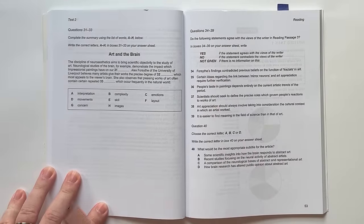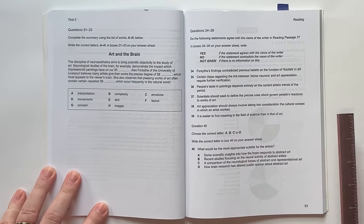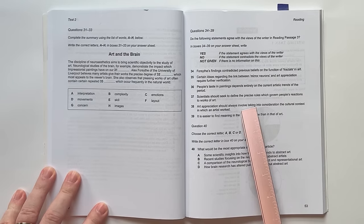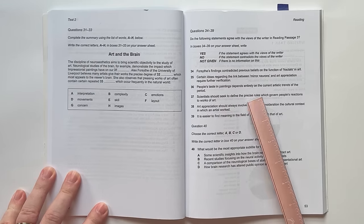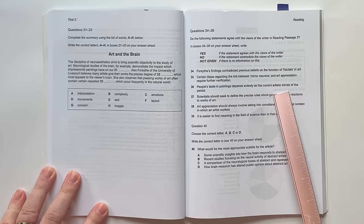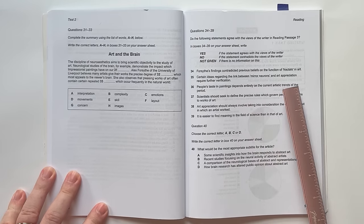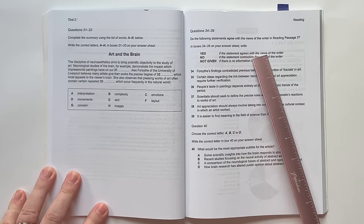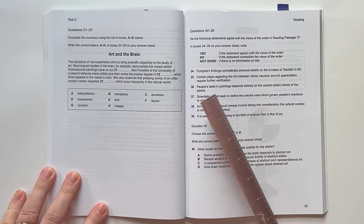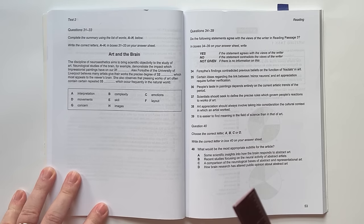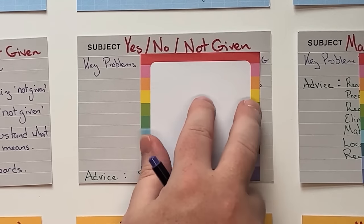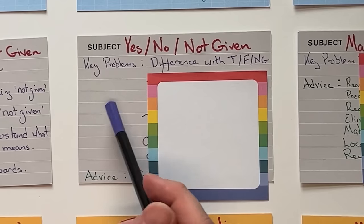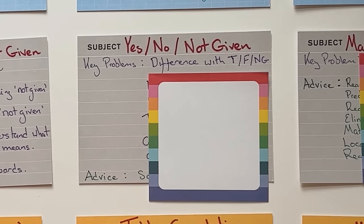Similar to true, false, not given are yes, no, not given. You look at the text and say whether the question statements are yes, no, or not given. The main difference is that we're not talking about facts here — we're talking about the writer's opinion. If the statement agrees with the writer's views, contradicts them, or there's no information to judge what the writer thinks. Students get confused about the difference between the two question types: true, false, not given is about fact; yes, no, not given is about the writer's opinion.